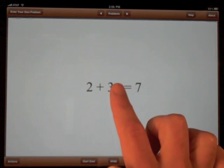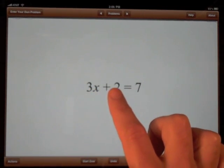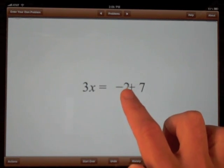To rearrange terms, just move them with your finger. If you move a term across the equal sign, Mathenation will automatically change the sign.